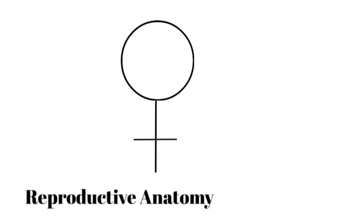We're going to start our discussion of reproduction with female reproductive anatomy. Reproduction is the creation of a new human being. In the case of humans and most animals, sexual reproduction requires both a male and female counterpart of the species. The female is going to produce or contribute the eggs to the process, and the males are going to produce the sperm cells. So let's take a look at the female reproductive anatomy.